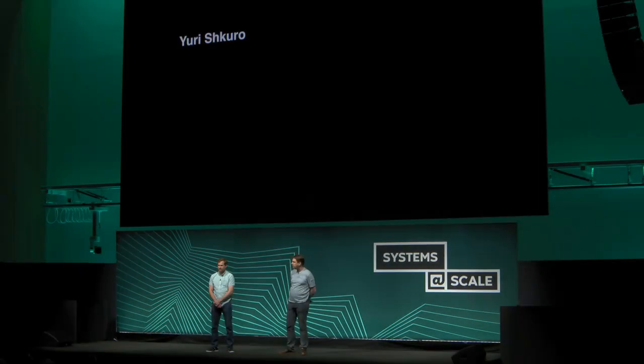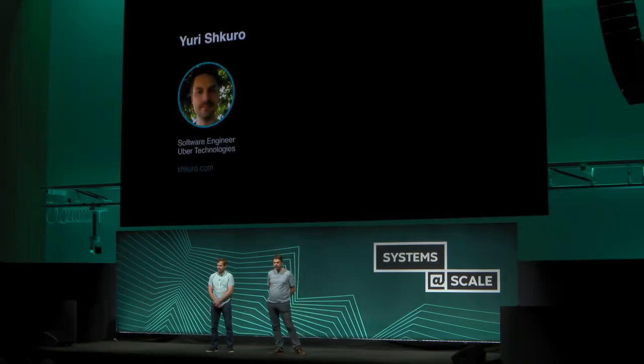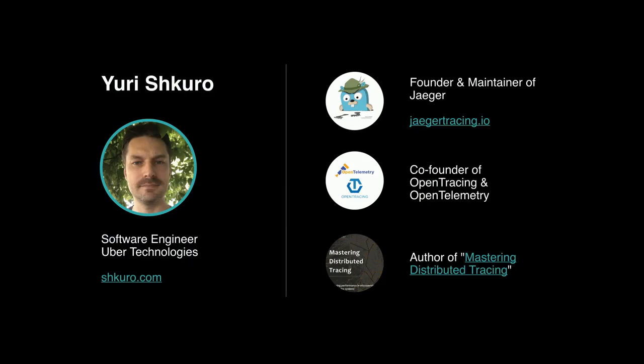Hi, my name is Yuri. I work at Uber on the observability team for about four years. I started the Jaeger project there, which now became a Cloud Native Foundation project — open source distributed tracing. I also worked a lot on OpenTracing and OpenTelemetry, and this year I published a book on tracing based on my experience from Uber.